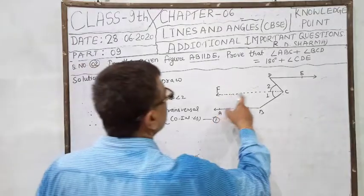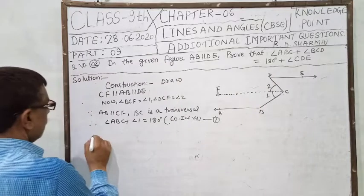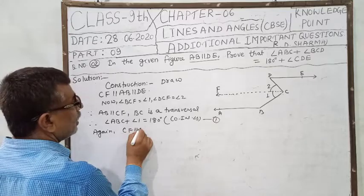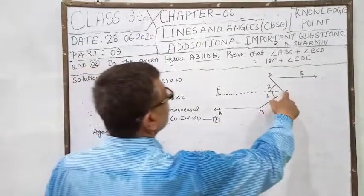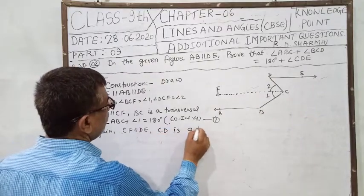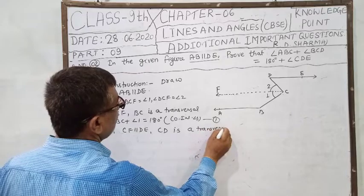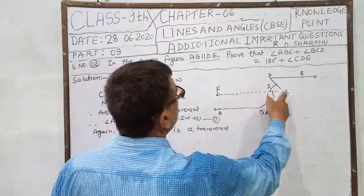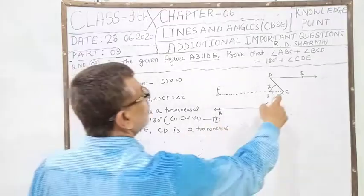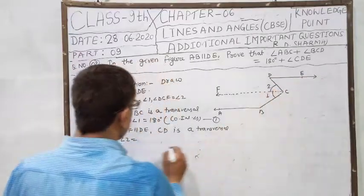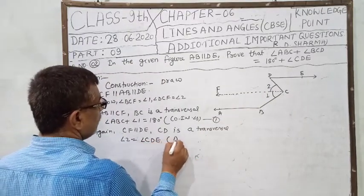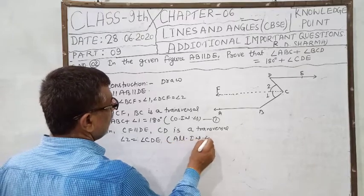Again, since CF parallel DE and CD is a transversal, that's why angle DCF (that means angle 2) is equal to angle CDE, alternate interior angles.